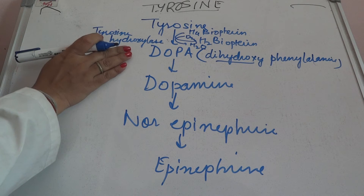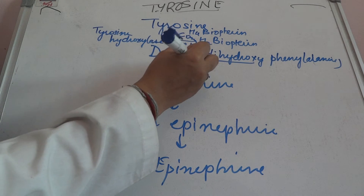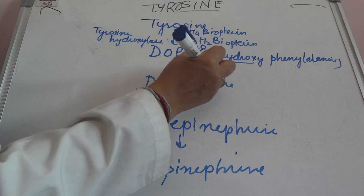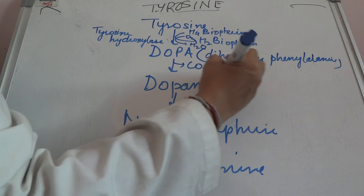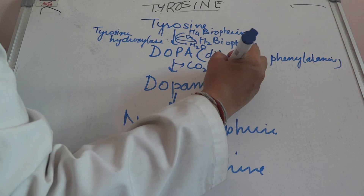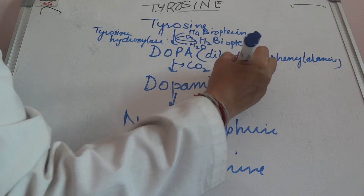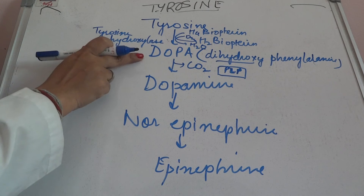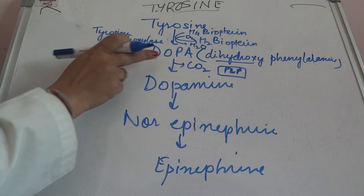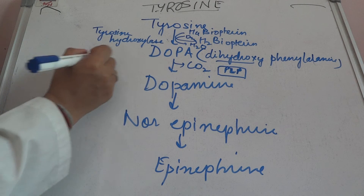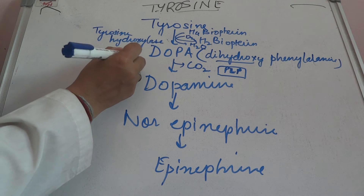Tyrosine to DOPA is a hydroxylation reaction by tyrosine hydroxylase; tetrahydrobiopterin and oxygen are required. Now coming to DOPA to dopamine: DOPA to dopamine involves removal of a carbon dioxide molecule, and it requires pyridoxal phosphate. So the enzyme is decarboxylase.